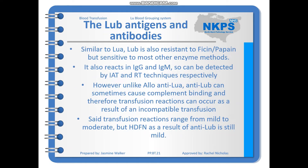LUB is also resistant to Ficin and Papain but sensitive to most other enzyme methods, and also reacts as IgG and IgM, detectable by IAT and room temperature techniques respectively. However, unlike allo-anti-LUA, anti-LUB can sometimes cause complement binding, and therefore transfusion reactions can occur as a result of an incompatible transfusion. These can range from mild to moderate, though HDFN as a result of anti-LUB is still normally mild.